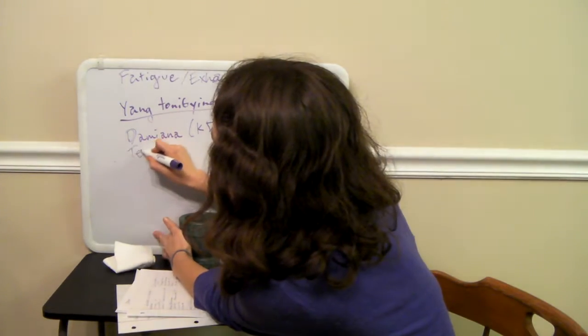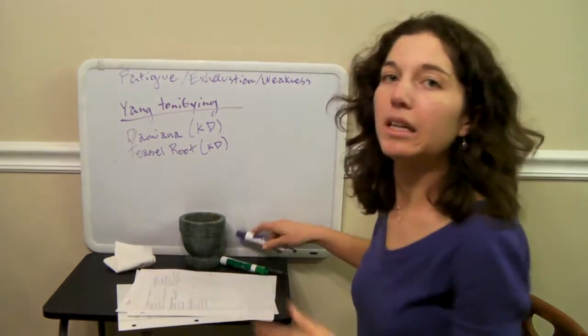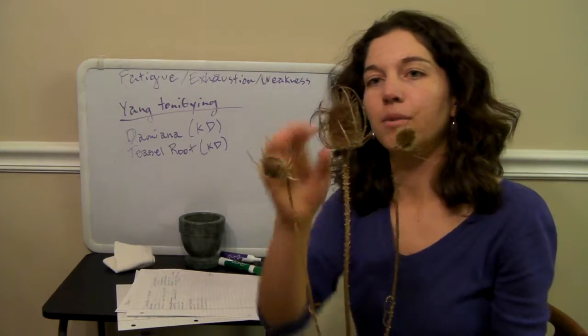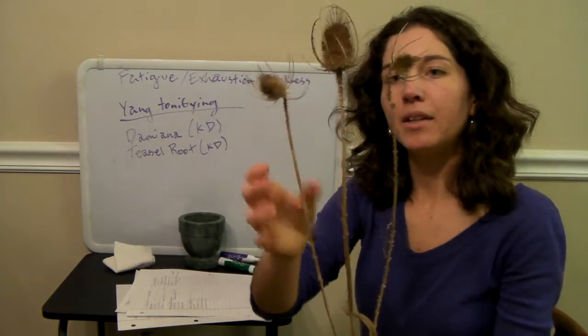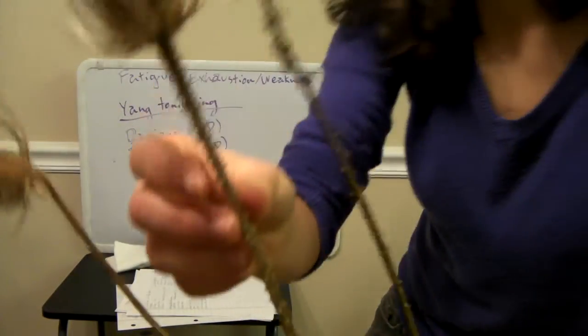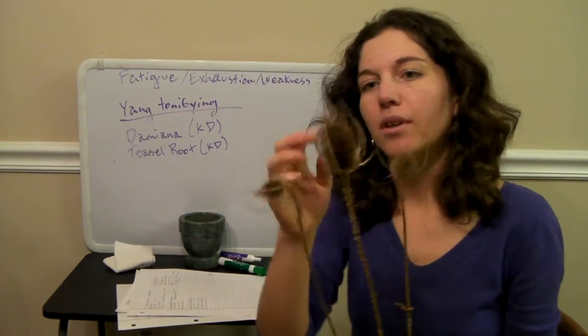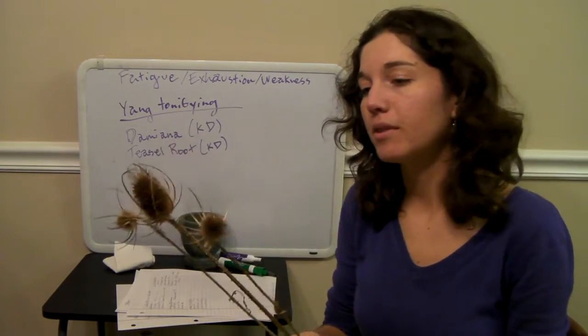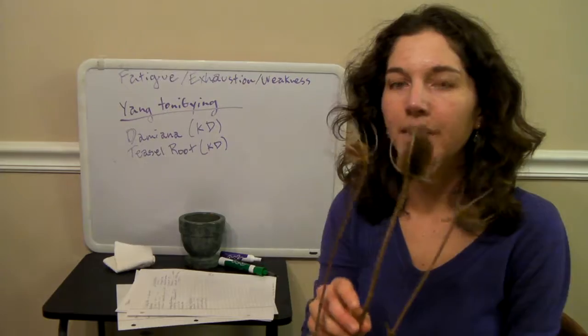Teasel root is also a favorite of mine. This is another kidney yang tonic. And you can probably forage for teasel. So if you've ever seen this on the side of the road, this is kind of dead, it usually has little purple flowers and it will be green. It has these spines on it that look like they just kind of want to murder you. That's how you know you've found teasel. And it gets really big. It'll get like five or six feet tall. But you want the root of the teasel. And you can dig that up and make a tincture out of it. And it's a nice kidney yang tonic. So it's really good for fatigue and exhaustion. And this is a plant that grows in the Southeast US. I see it a lot on the side of roads, waste areas. It's pretty easy to find.